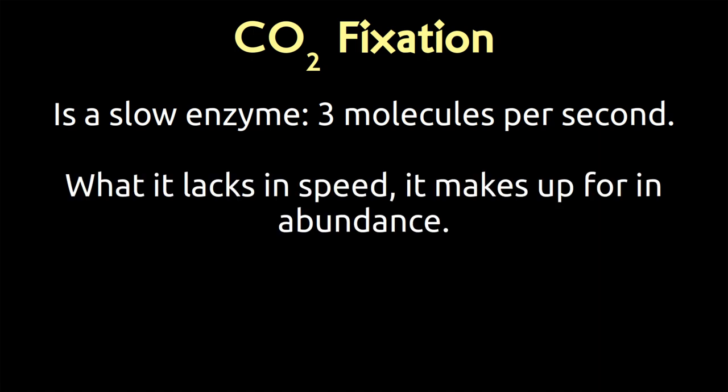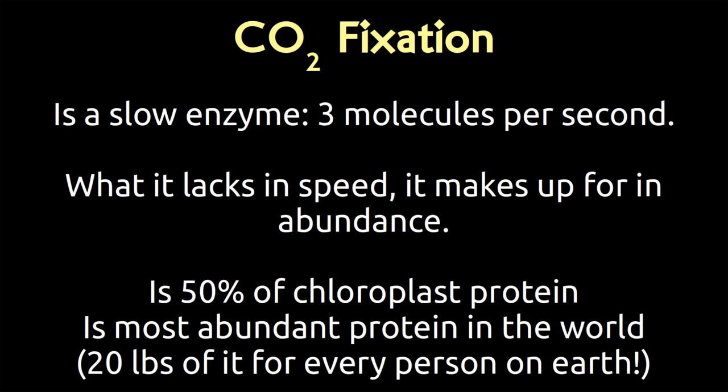But the thing is, there's lots of it. What it lacks in speed, it makes up for by having tons of them. In the chloroplast, it's like 50% of the protein in the chloroplast is rubisco. In fact, this is the most abundant protein on the whole earth. There are 20 pounds of rubisco on earth for every man, woman, and child on earth.